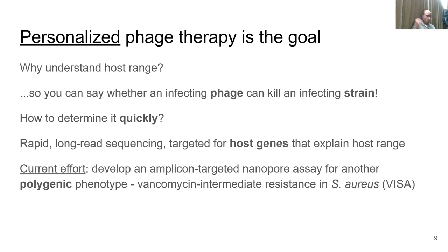Why do I need to understand host range? The goal is to personalize phage therapy — to say whether an infecting phage can kill a strain infecting a person. The issue is how you can determine this quickly without the time limitations of culturing. Recently, rapid long-read sequencing has been developed that can be targeted for host genes explaining host range or other polygenic phenotypes. One part of my thesis involved developing an amplicon-targeted nanopore assay for vancomycin intermediate resistance in S. aureus, or VISA.